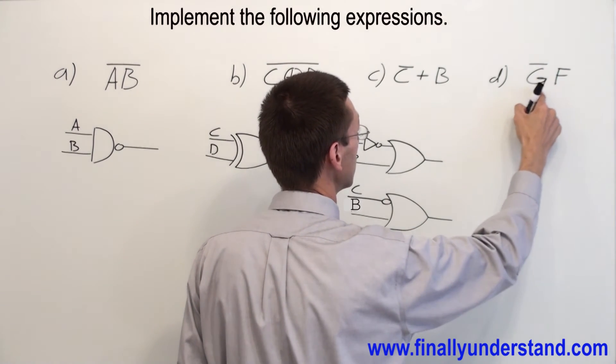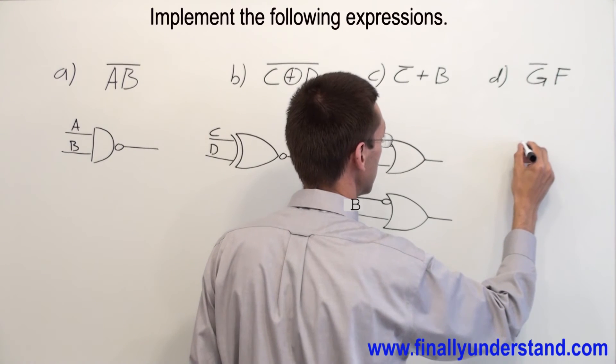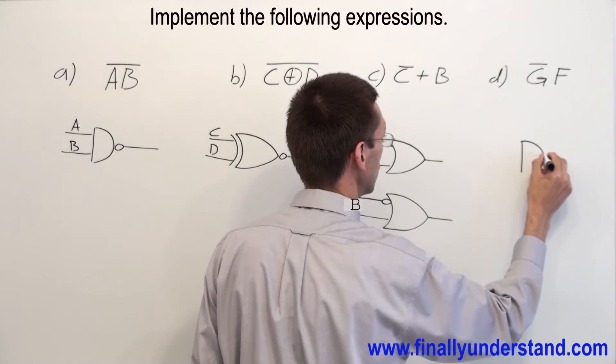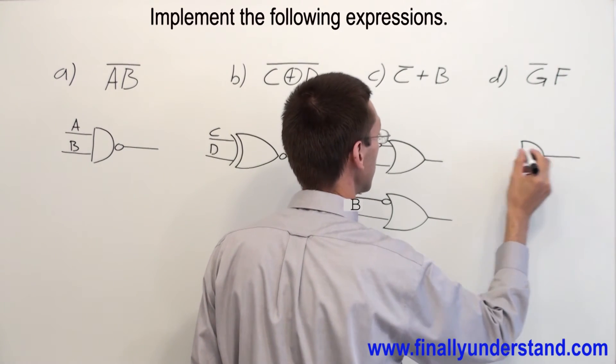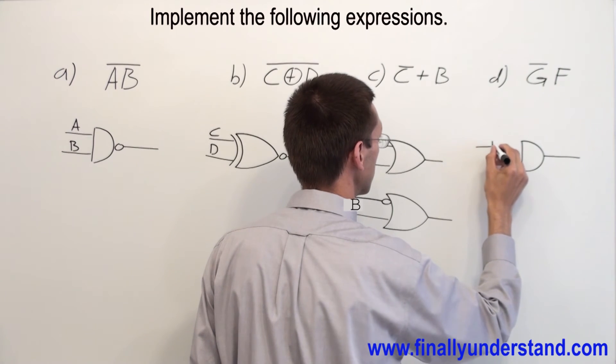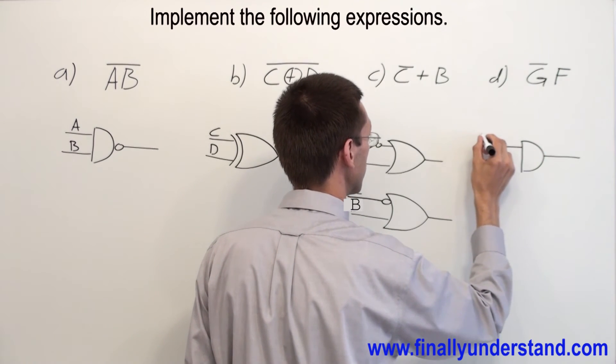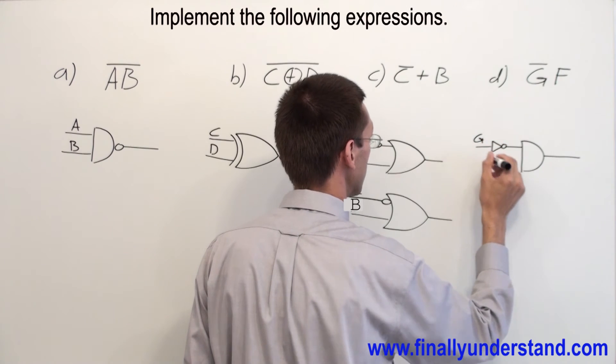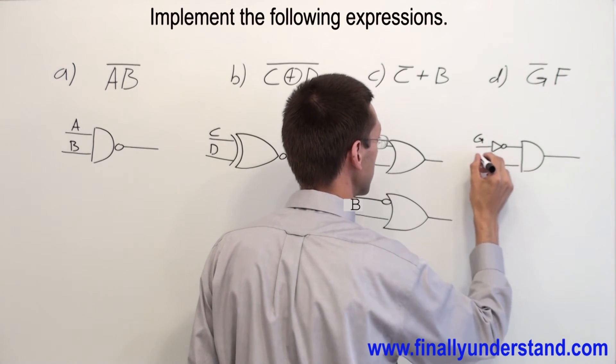Now what is this? This is an AND gate. So I'm going to draw an AND gate. But G is connected to the inverter, and this is my F.